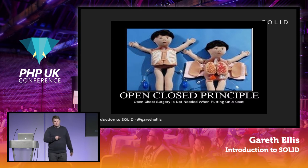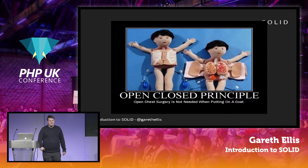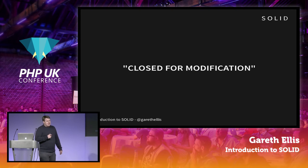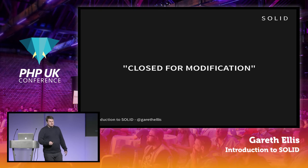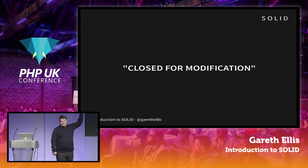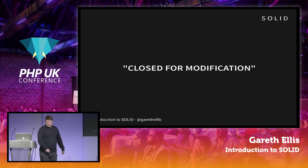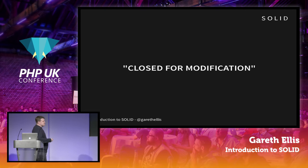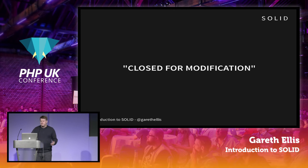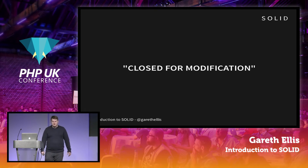Closed for modification does not mean we should never change source code. How many people here have had a class which is doing its job, it's working, hasn't got any bugs you know of, and you have to change its functionality in some way — and then you introduce a bug? Changing code is a really common entry point for defects. If we can design up front for extension, anticipating ways we might need to use our code in the future, we can hopefully avoid source code changes and reduce the likelihood of introducing bugs.